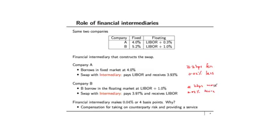Why does the intermediary get that? This is compensation for taking on the counterparty risk. If either of these two companies defaults, the financial intermediary is on the hook to provide the cash flow necessary for the surviving party. It also provides a service in the sense that typically in the market, Company A and Company B don't know that they exist and that their relative strengths differ. By creating a swap, the financial intermediary brings these two parties together, constructs a mutually beneficial swap, and gets paid for providing this service.